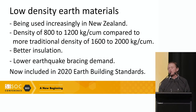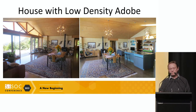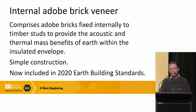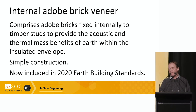So now we're using much lighter materials. This has the advantage of better insulation and also lower earthquake bracing demand. Provision is now included in the 2020 earth building standards for these low-density materials. Another technique is internal adobe brick veneer. This comprises adobe bricks fixed internally to timber studs to provide the acoustic and thermal mass benefits of earth within the insulated envelope. It's simple to construct and is now included in the 2020 earth building standards. Big advantages with having the insulation on the outside of the earth wall and the mass on the inside.